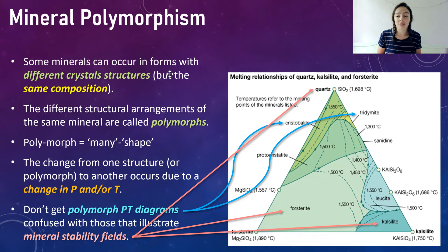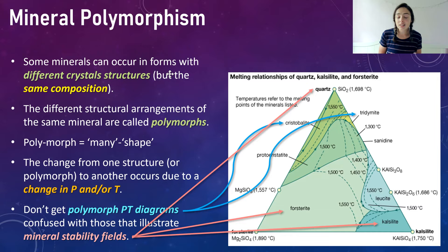Different minerals have different compositions. For example, plagioclase feldspar has a solid-solution series from albite to anorthite — albite has more sodium and anorthite has more calcium, both within the same general aluminum silicate composition. So when the composition changes, the mineral changes. The structure changing without the composition changing means the only thing changing is that it's a different polymorph.